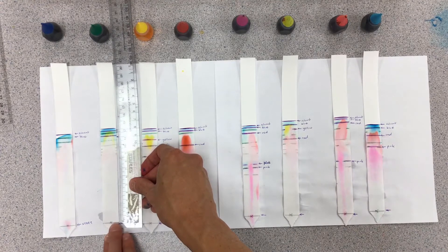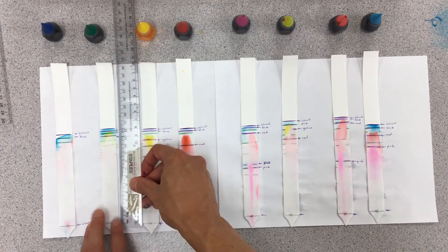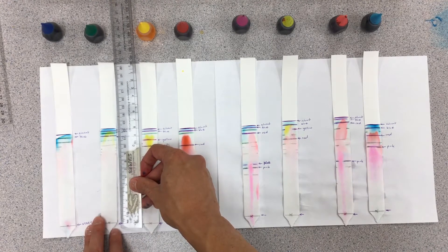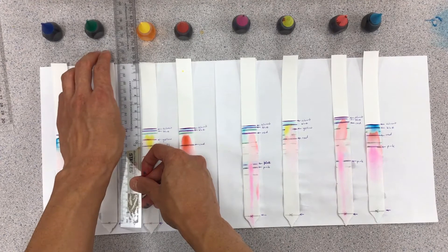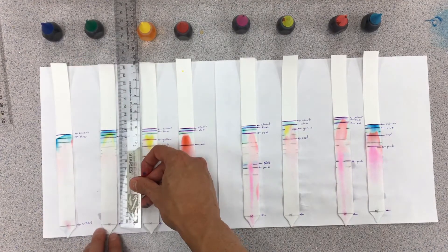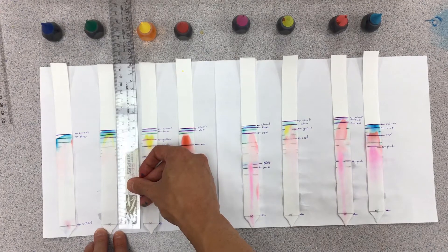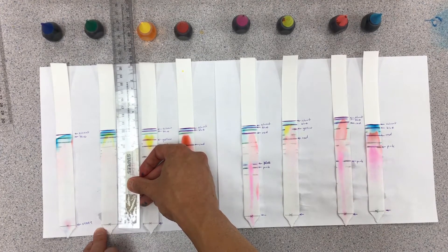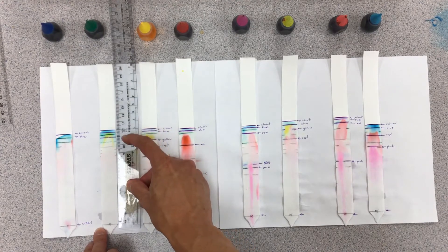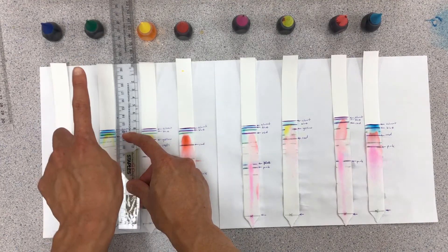I'm just going to prop down this ruler so you can make measurements of the different solvents. Some of these food colorings are actually made out of multiple different compounds. Green is actually made out of blue and yellow, as we can see is separated on this chromatography sheet. About 12 centimeters to the solvent, the blue line is about 11.7, the yellow line is roughly about 11.5.